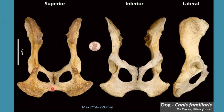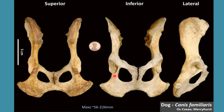The medial border of ischium joins with the similar part of the adjacent bone to form the symphysis pelvis. The body of ischium is present just lateral to the obturator foramen and contains the sciatic spine and lesser sciatic notch. The sciatic spine is a rounded crest present just dorsal to the acetabulum.